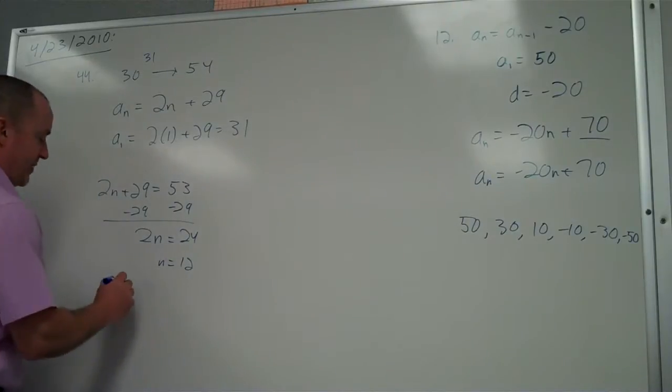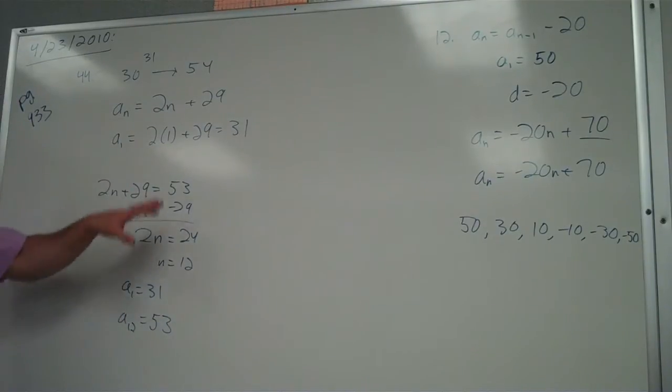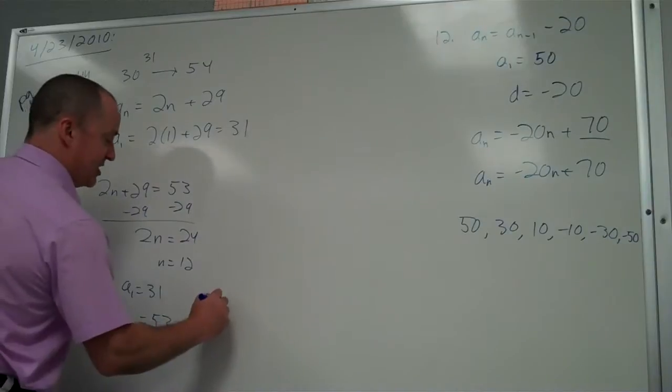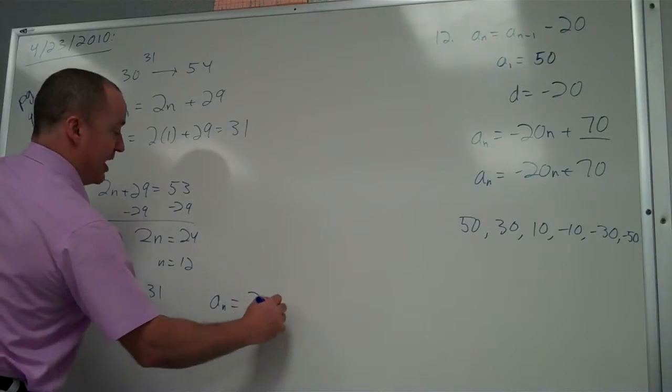Alright, so a sub 1 is 31, a sub 12 is 53. Counting's good, but I'm trying to prove it. And a sub n, any term, is 2n plus 29.